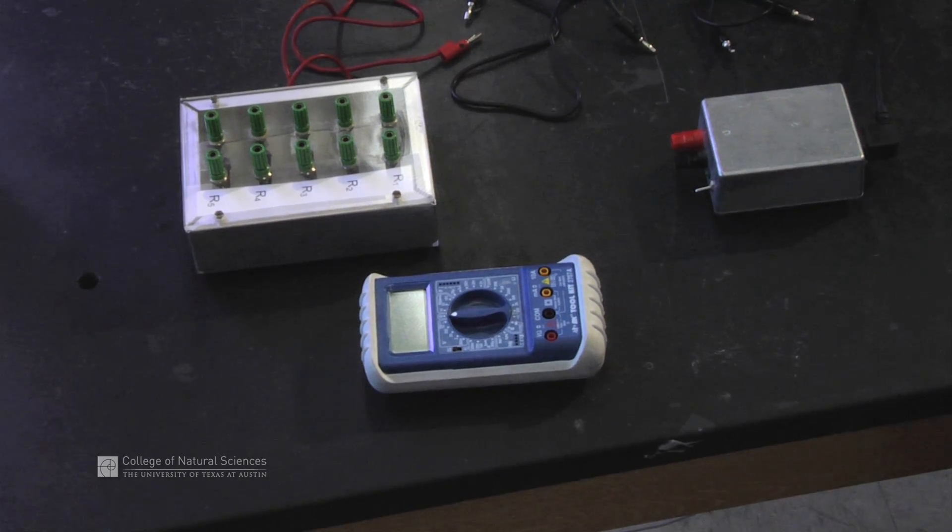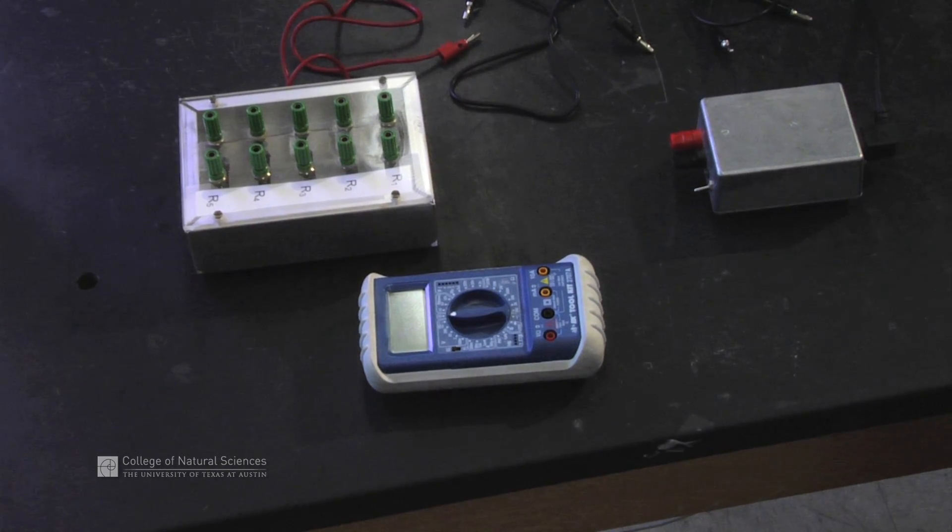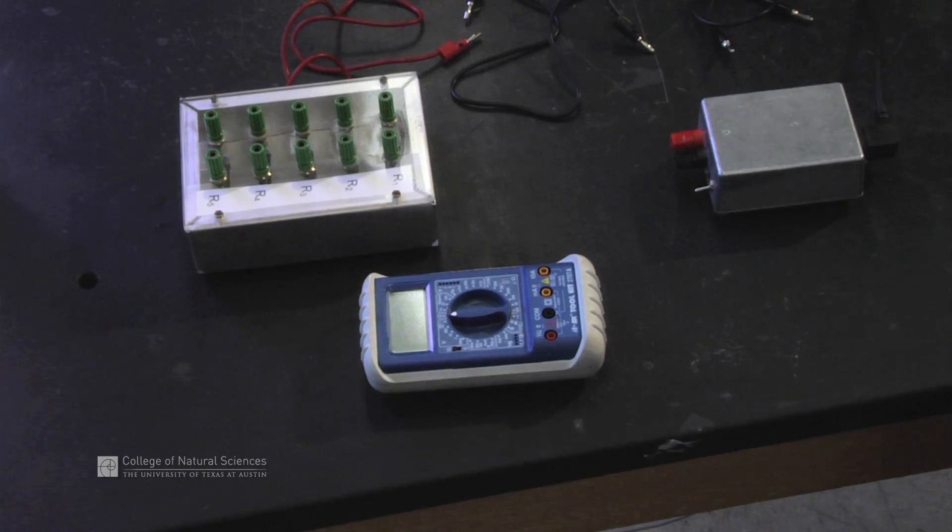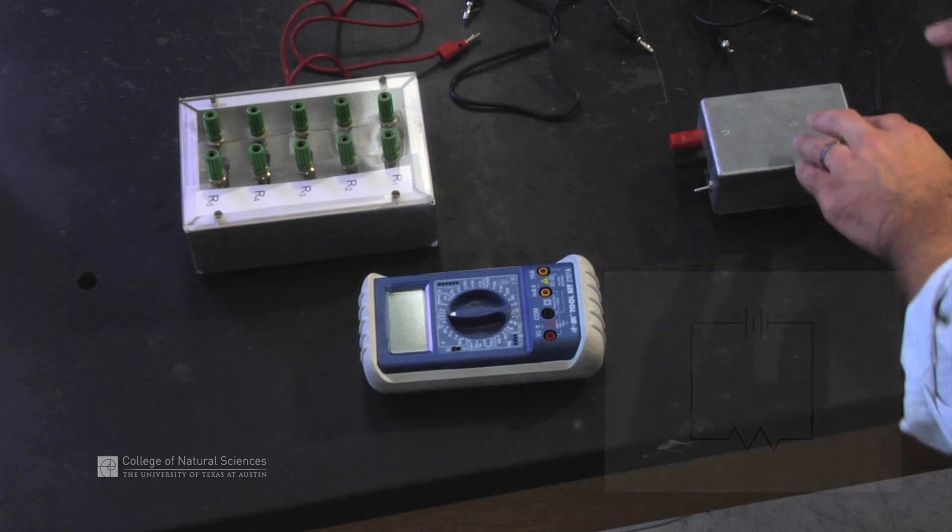In this video, we'll show you how to set up the multimeter to take a measurement of current. The first thing we need to do is construct our circuit.